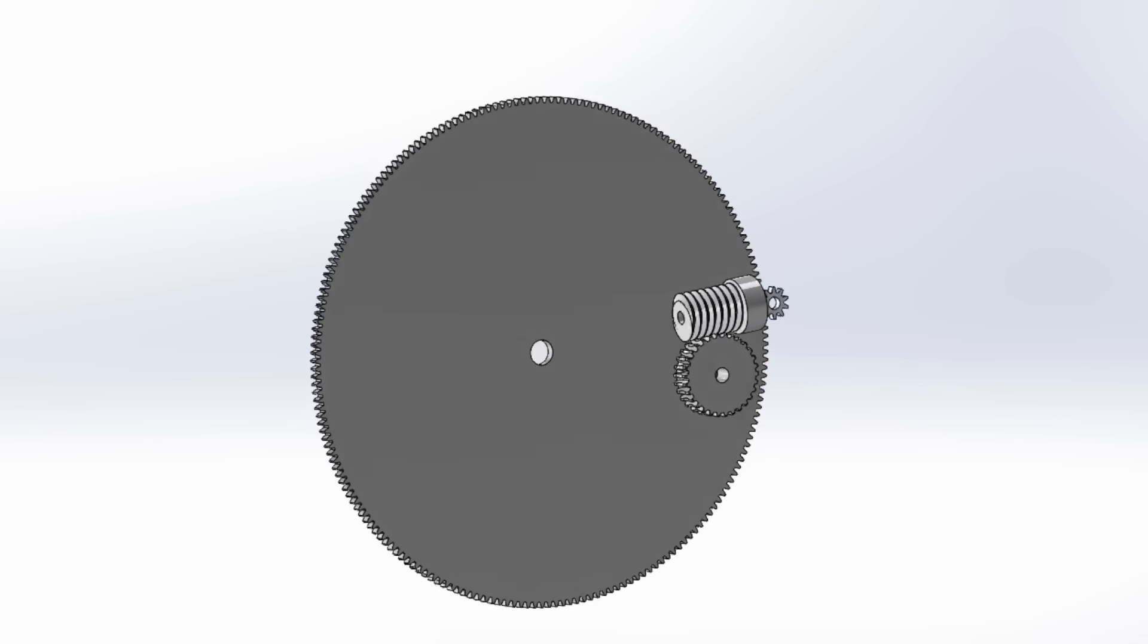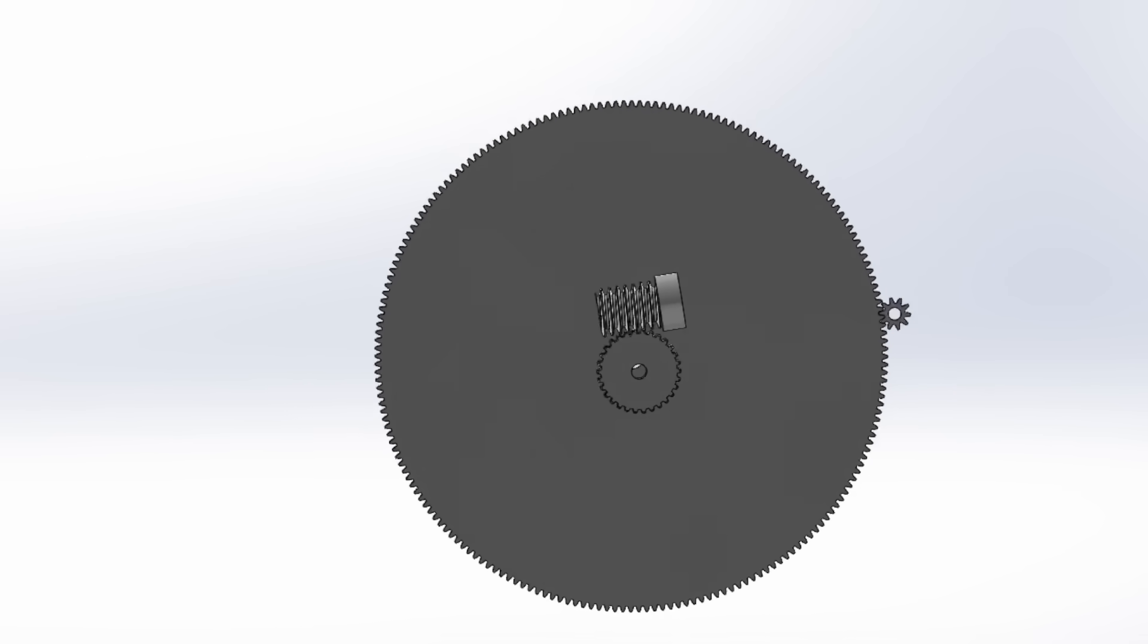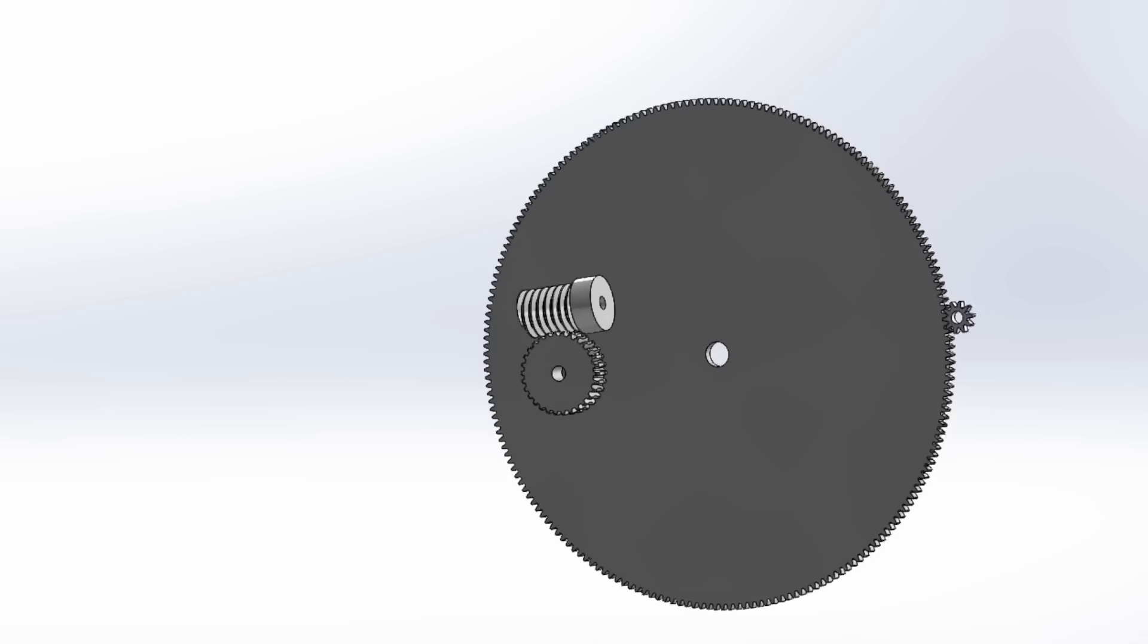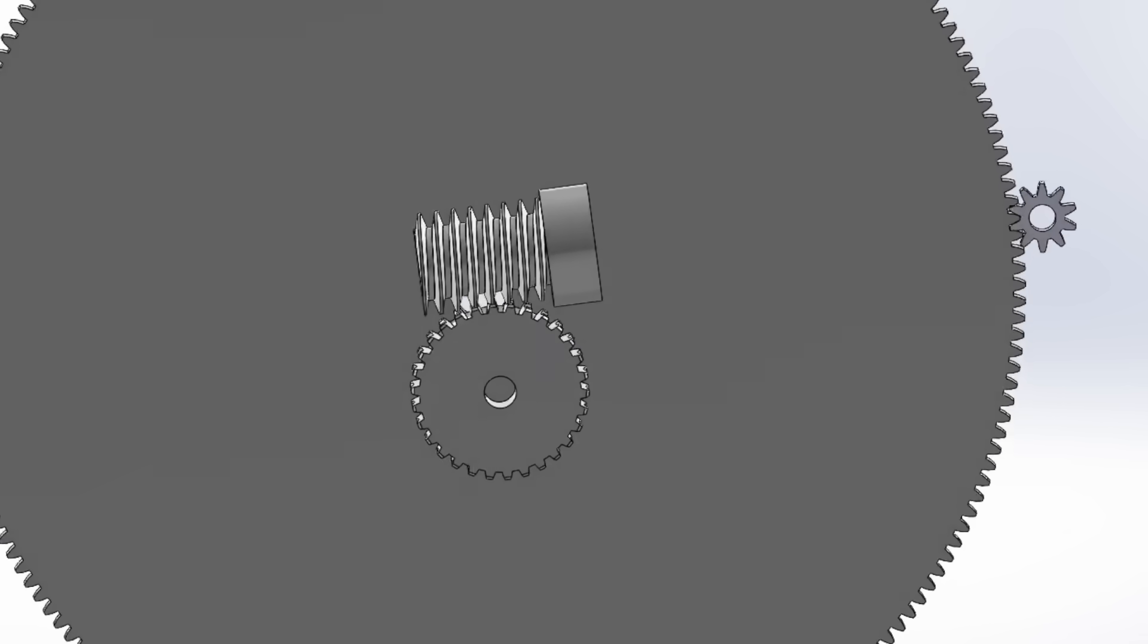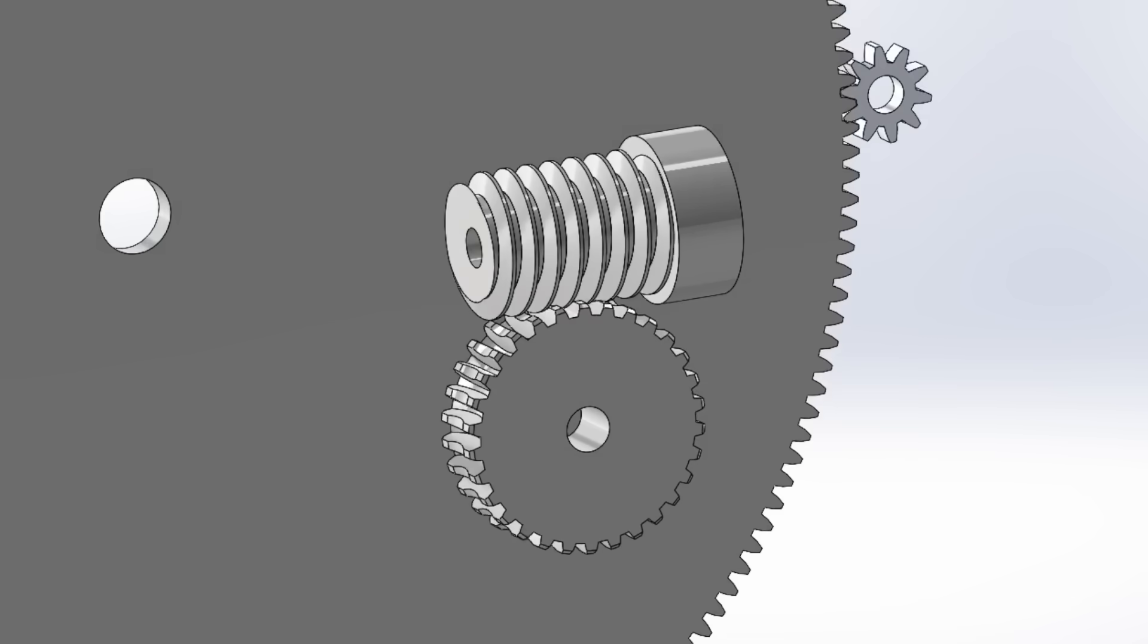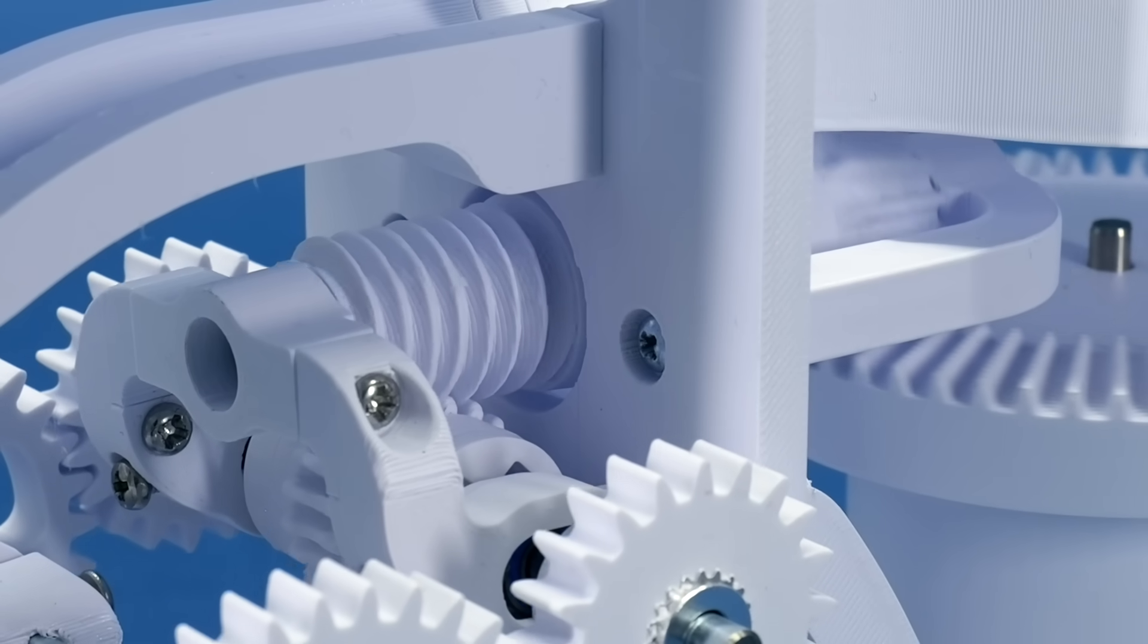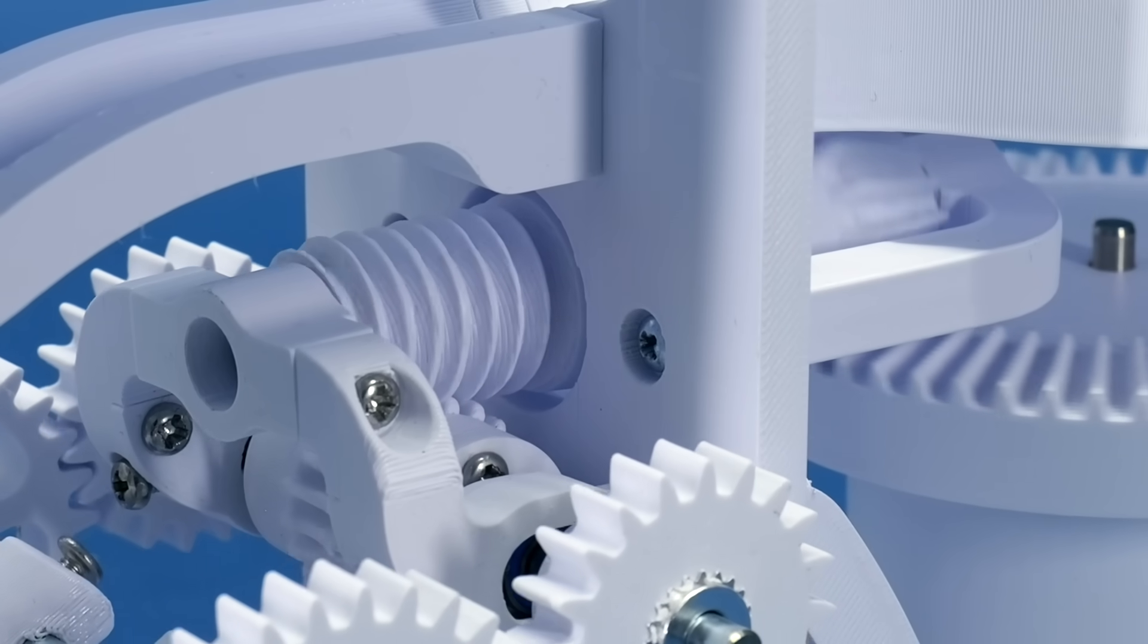We needed a worm gear here because it can fit a really high gear ratio into a small space. For reference, these two gear systems have the same 20 to one gear ratio. It's easy to see how much smaller and simpler the worm gear is. It's always important to note that every engineering decision has its pros and cons, and a worm gear trades efficiency and speed for a compact, high torque ratio.